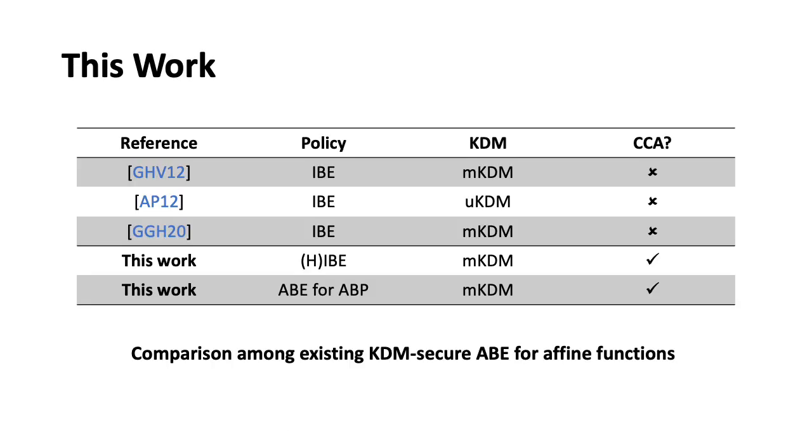In this work, we propose a generic framework of mKDM security ABE under standard pairing-based assumption, and support more complex policies than IBE, which has never been reached since the first KDM security IBE was proposed in GHV12 and AP12. In particular, we obtain the first HIBE schema with mKDM security for affine functions, and the first ABE for ABP with mKDM security for affine functions. Also, thanks to the expressiveness, that is, delegability like HIBE, we improve the security to CCA security by the classical CHK CPA to CCA transformation.